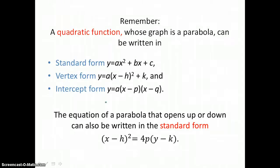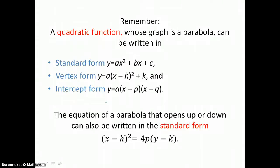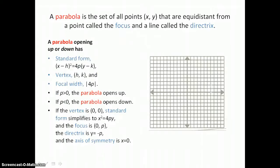The standard form is: x minus h, the quantity squared, equals 4p times y minus k. A parabola is a set of all points x, y that are equidistant from a point called the focus and a line called the directrix.